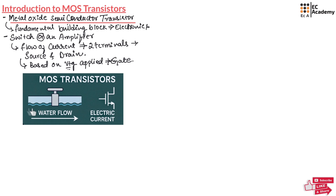Here is an example that shows how a MOS Transistor works. Imagine source and drain as two ends of a pipe and gate as a valve that controls the water flow through this pipe. Similarly, the current flows in the channel of a MOS Transistor and the voltage applied across the gate determines whether the channel allows or blocks current flow. This makes MOS Transistors incredibly useful in digital electronics like mobile phones and computers, where they act as tiny switches to process information.